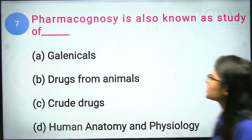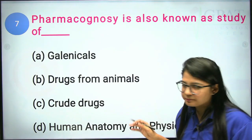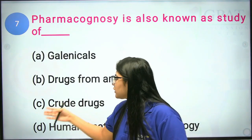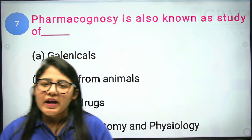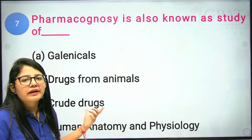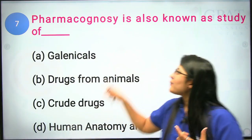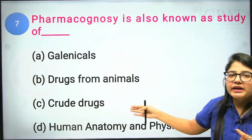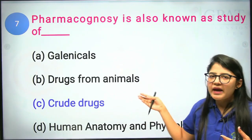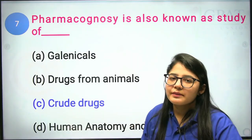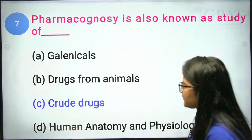The seventh question: pharmacognosy is also known as the study of what? The main chemical constituents are extracted from crude drugs and raw plant materials. Pharmacognosy is known as the study of crude drugs. Drugs from animals is not the definition of pharmacognosy, because pharmacognosy is based primarily on plants. The correct answer is crude drugs.